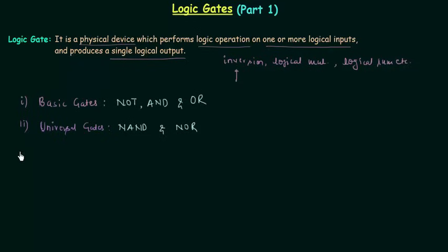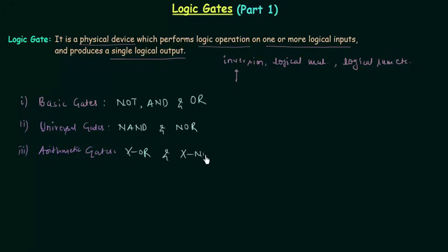The last group is arithmetic gates. In this group we also have two gates. The first one is EXOR and the second one is EXOR. We call them arithmetic gates because we use them in arithmetic operations.